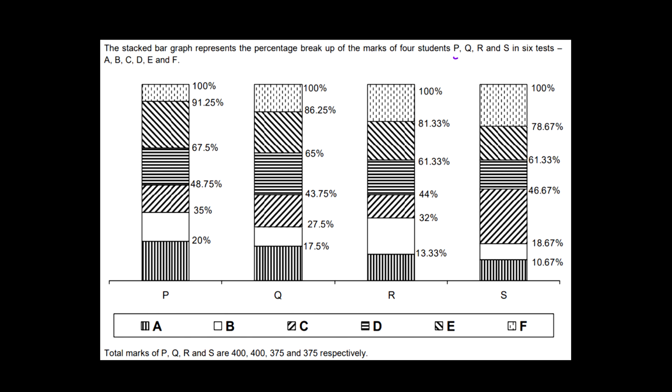Let's read what data is mentioned here. The stacked bar graph represents the percentage breakup of marks of four students P, Q, R, S in six different tests A, B, C, D, E, F. You can see the different colors and shading represent the six different test marks. The marks of each test would be the percentage difference. For example, 35 minus 20 is 15%, and 15% of the total score is scored in test B. The total score of P is 400, same as Q, and then R and S have 375 as the total score. So 15% of 400 is the test marks scored in B by P. Once you get the way of getting the data from a bar graph and converting it into a table, life becomes simpler in such questions.